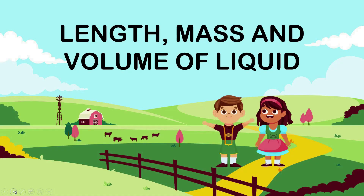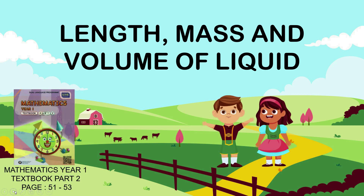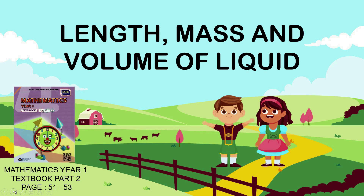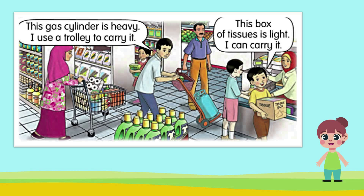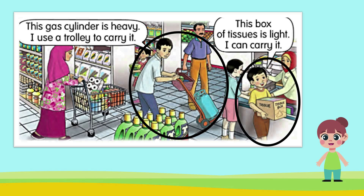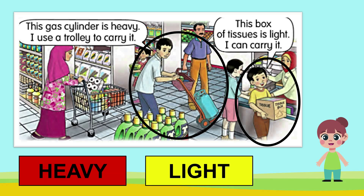Good day, pupils. Our topic for today is length, mass and volume of liquid. In this video, we are going to learn about mass. Please refer to Maths Year 1 Textbook Part 2, pages 51 to 53. Look at this picture — you can see many people buying things in a supermarket. The young man is using a trolley to carry the gas cylinder because it is heavy. The small boy is carrying the tissue boxes easily because it is light. We can use the terms heavy and light for mass.